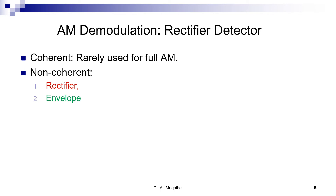Now, to go to the receiver side: of course, we can receive double sideband plus carrier coherently, which means we're going to build a receiver by multiplying the incoming signal by a cosine which is coherent — meaning there is no extra phase. This is called coherent detection. You can do this, but this is rarely used. Why? Because we went from double sideband suppressed carrier to double sideband plus carrier for the advantage of easy reception. So if you're going to use coherent detection, you're not making advantage of easy reception. We can do easy reception, or non-coherent detection, using two receivers: one called rectifier detector, and the other called envelope detector.